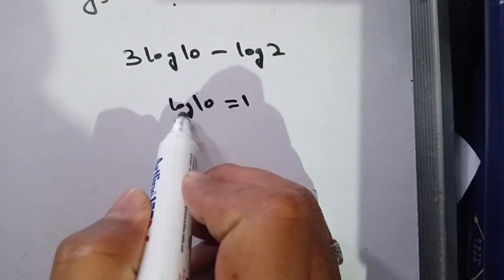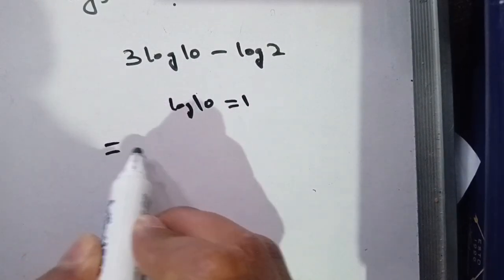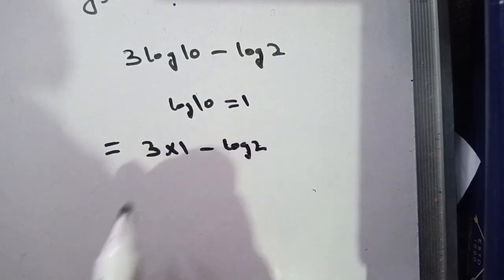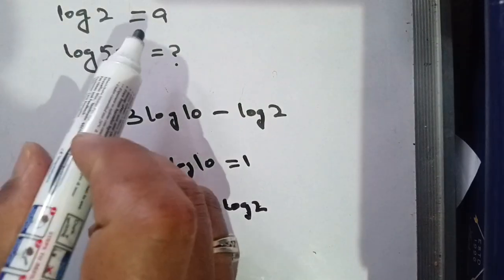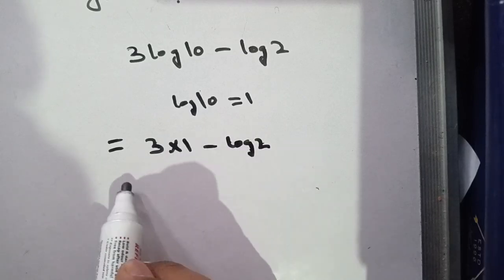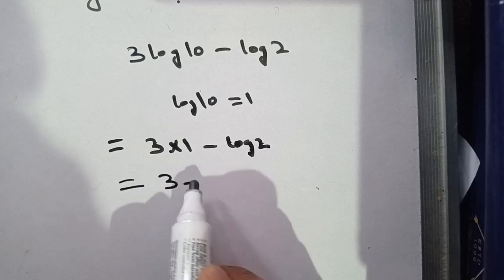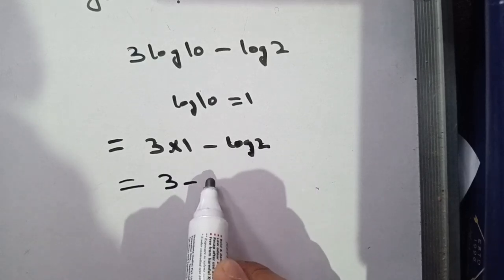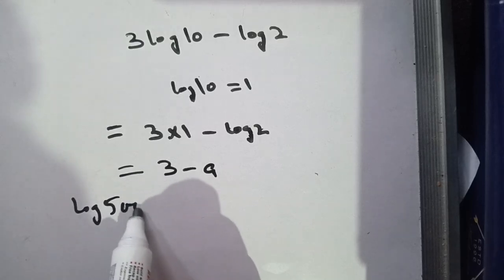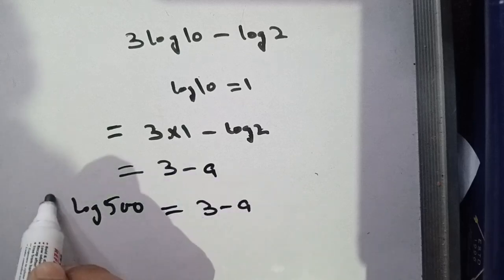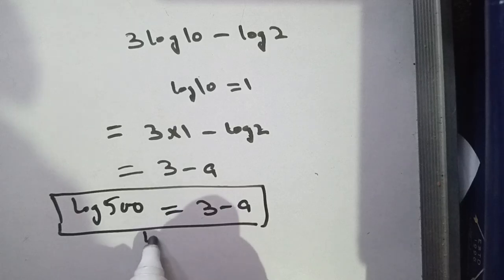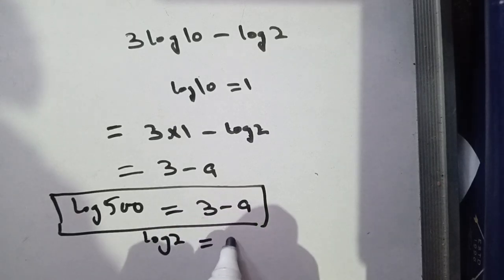Using this value, 3 log of 10 becomes 3 times 1, which is 3. We are given that log of 2 is equal to a. Substituting, we get 3 minus a. Thus, log of 500 is equal to 3 minus a, which is the required value of log of 500 if log of 2 is equal to a.